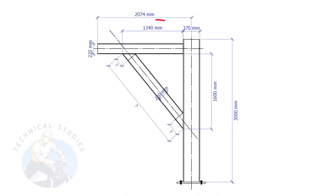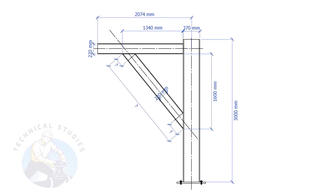In this example, the top leg length is 1340 mm and the vertical leg length is 1600 mm. What will be the length and the cutback of the bracing?